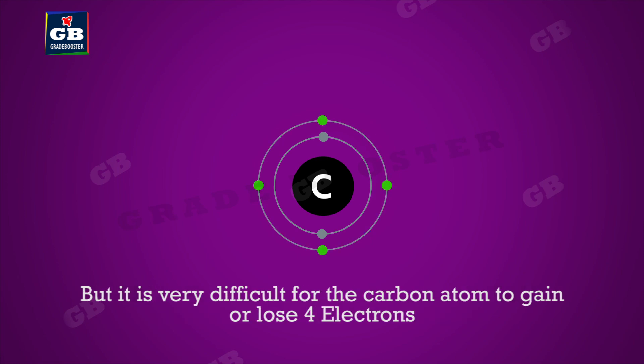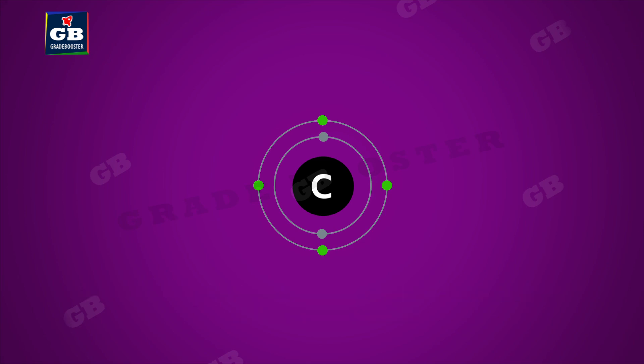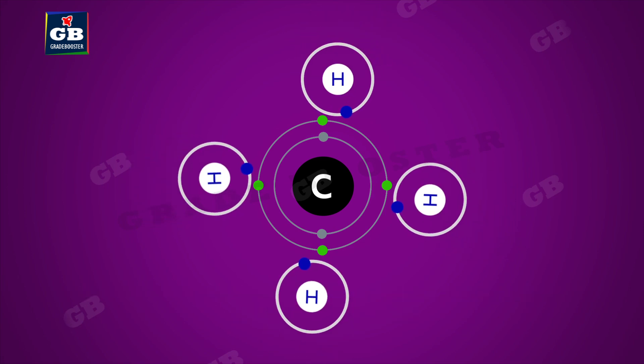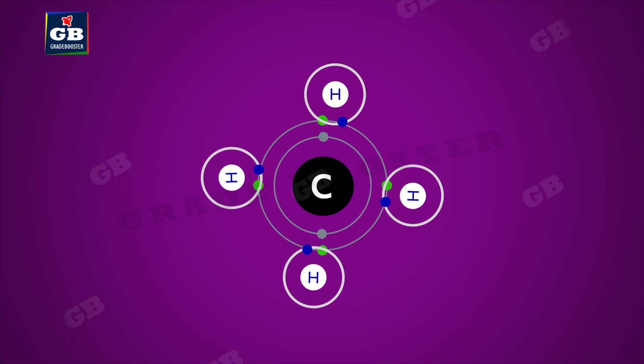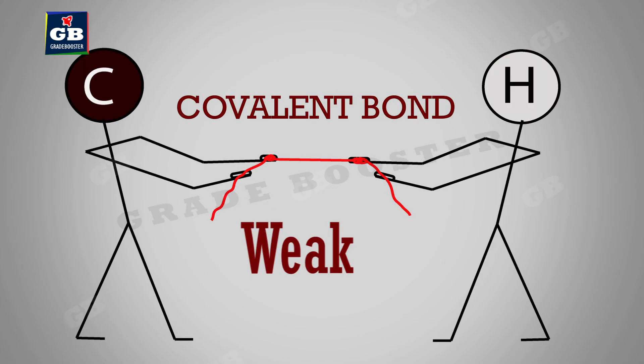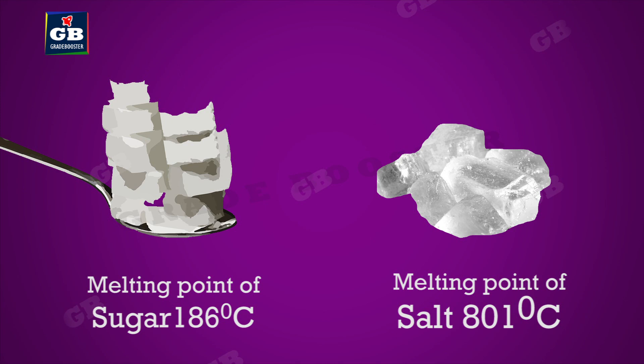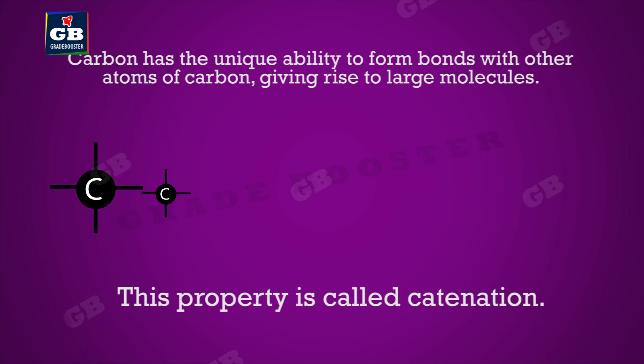The valency of carbon is 4 — it has to either lose 4 electrons or gain 4 electrons to attain stability, but it is very difficult for the carbon atom to do so. So carbon forms covalent bonds with other elements to make carbon compounds. Covalent bonds are weaker than ionic bonds, so carbon compounds have lower melting and boiling points compared to ionic compounds — for example, sugar melts at 186°C while salt melts at 801°C.